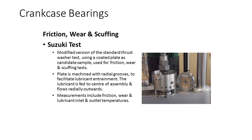Fatigue strength is a measure of the delamination life of the soft metal coating caused by cyclic loading. The Suzuki test is a modified version of the standard thrust washer test geometry using the coated plate as the candidate sample. It is used for friction, wear and scuffing tests. The plate is machined with radial grooves to facilitate lubricant entrainment. The lubricant is fed to the centre of the assembly and flows radially outwards. In addition to measuring friction and sometimes wear, the difference in lubricant inlet and outlet temperatures is a useful measure.